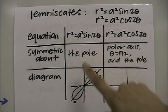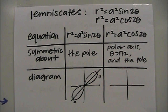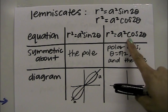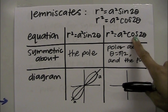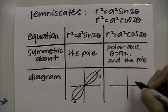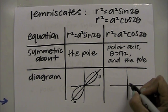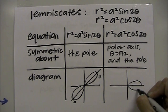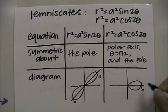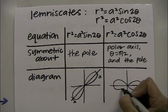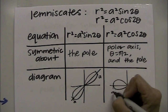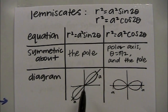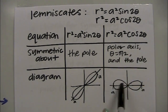The sine lemniscate goes along the line y equals x — that's all you need to do, going out length a in both directions. For the cosine equation, the graph lies along the x-axis, and the rule still applies: the length of the propeller is a. So sine goes along y equals x, and cosine goes along the x-axis.